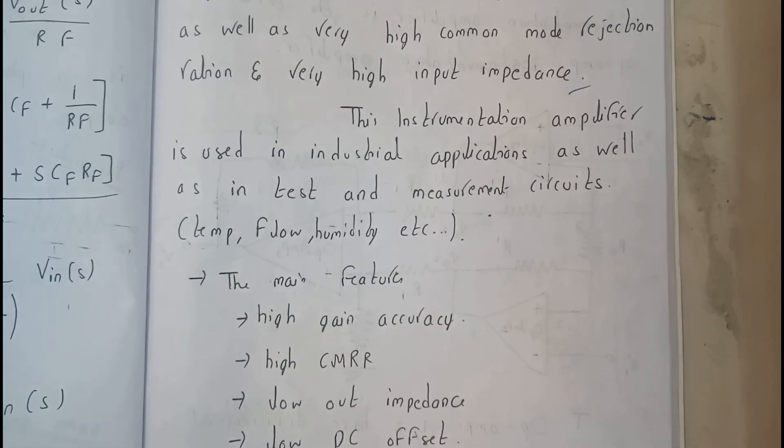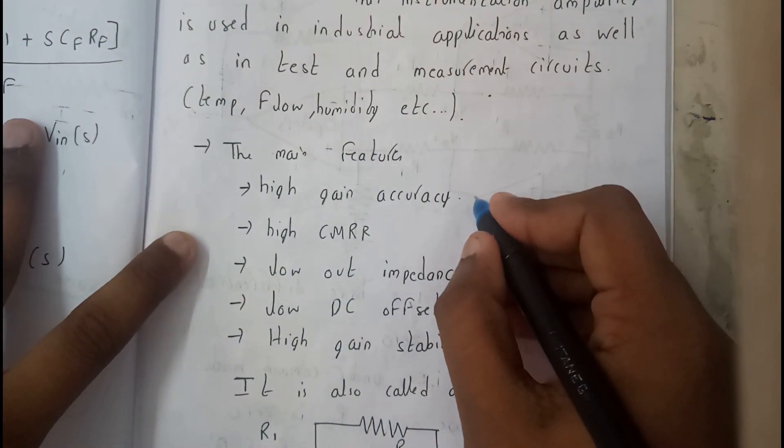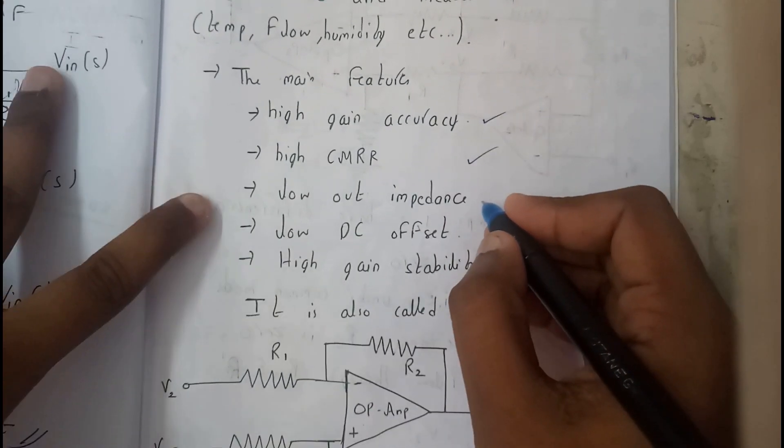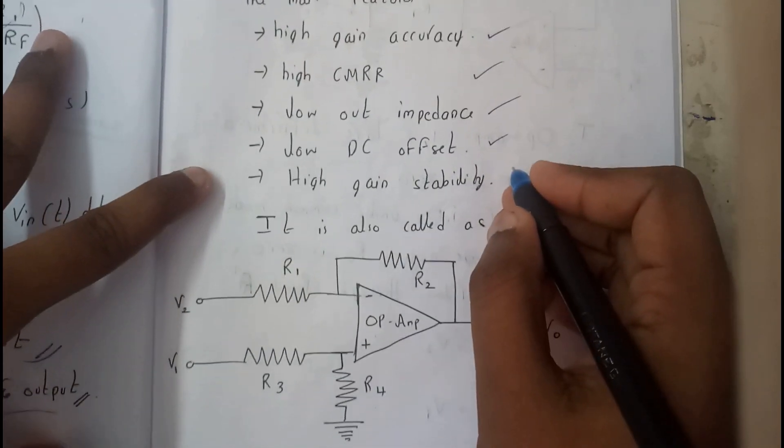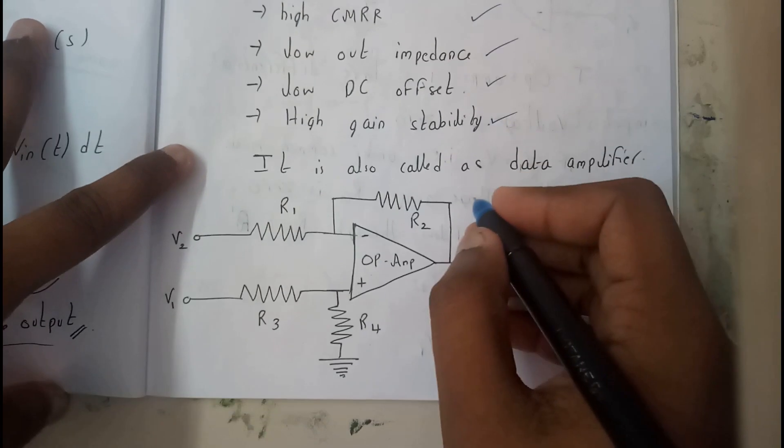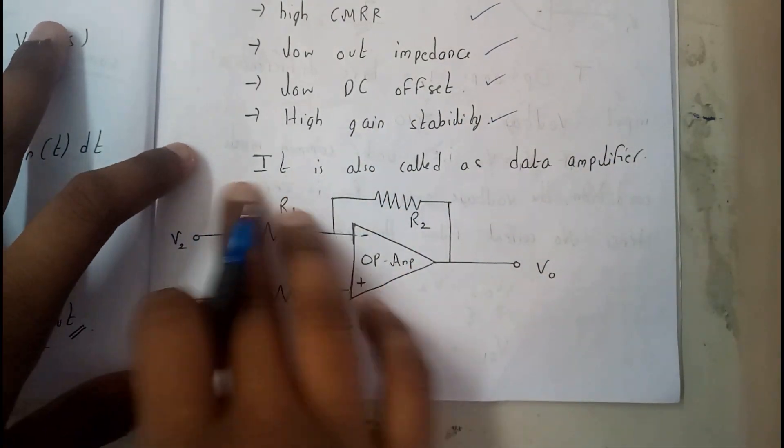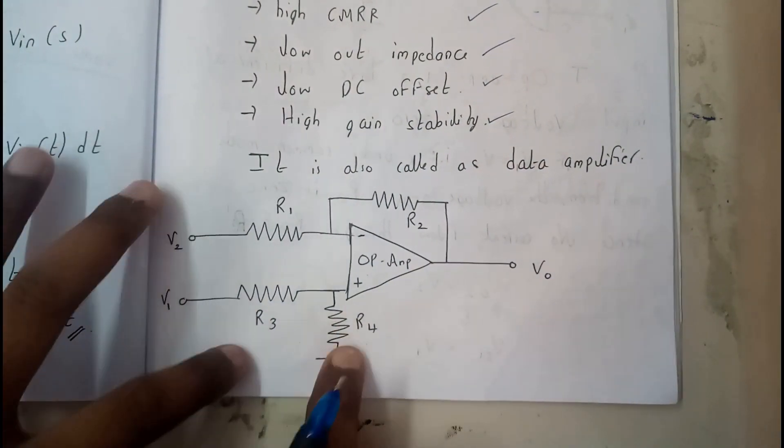The main functions are high gain, high CMRR, low output, low DC offset, high gain stability, and high input. The diagram is quite small. It is also called a data amplifier.